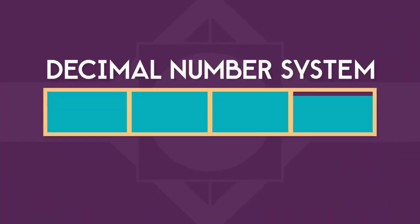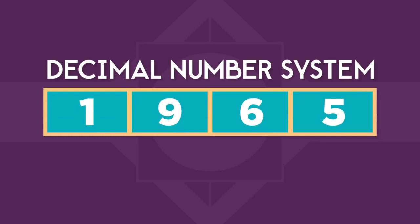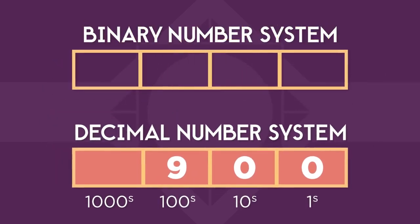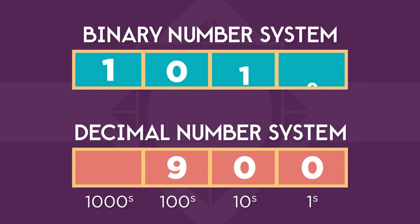Here's how this works. In the decimal number system we're all used to, each position in a number has a different value — there's the one position, the ten position, the one hundred position, and so on. For example, a nine in the one hundred position is nine hundred. In binary, each position also carries a value, but instead of multiplying by ten each time, we multiply by two. So there's the one's position, the two's position, the four's position, the eight's position, and so on.